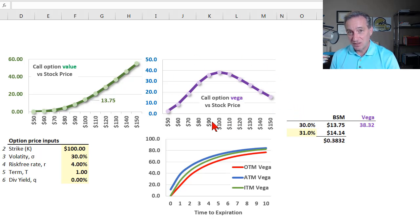I'd like to show you option vega including the formula and why, if we understand the formula, we understand why option vega has a bell-shaped curve peaking when the option is at the money.